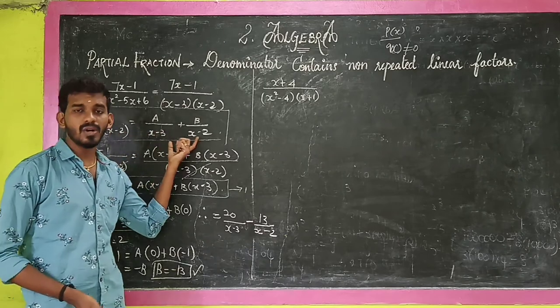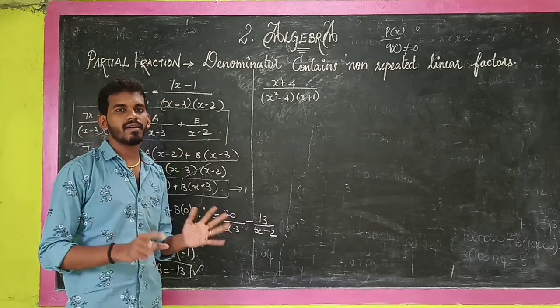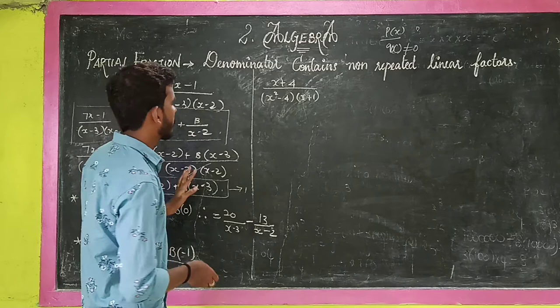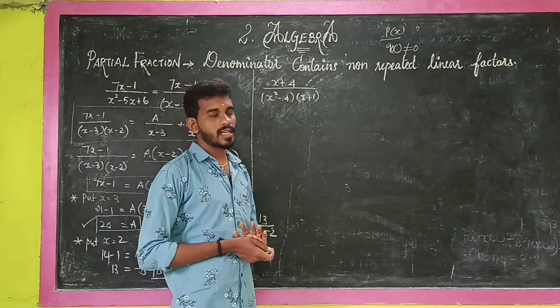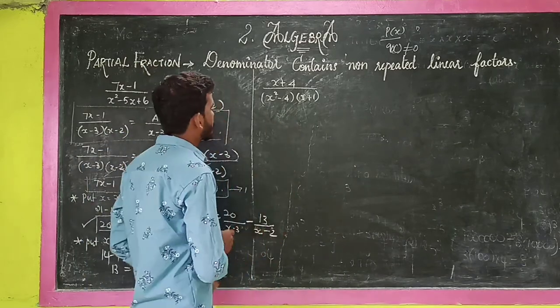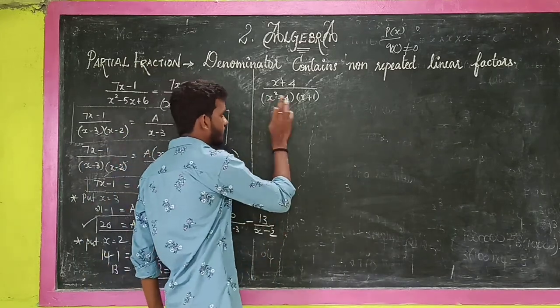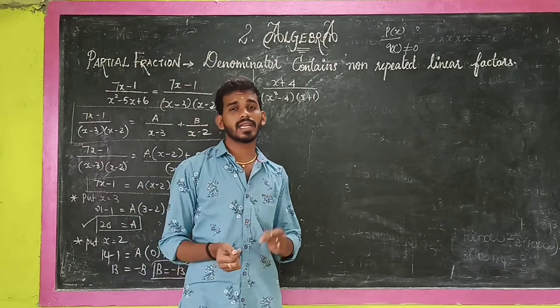So the partial fraction is: 20 divided by (x minus 3) plus minus 13 divided by (x minus 2). We found the A and B values — that is all. This is our partial fraction.